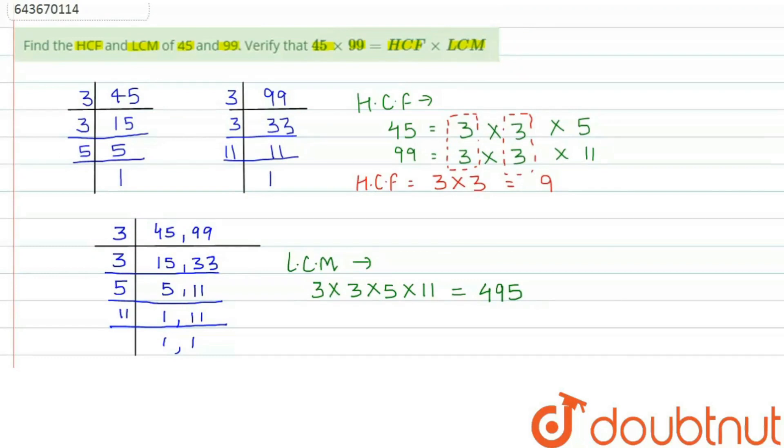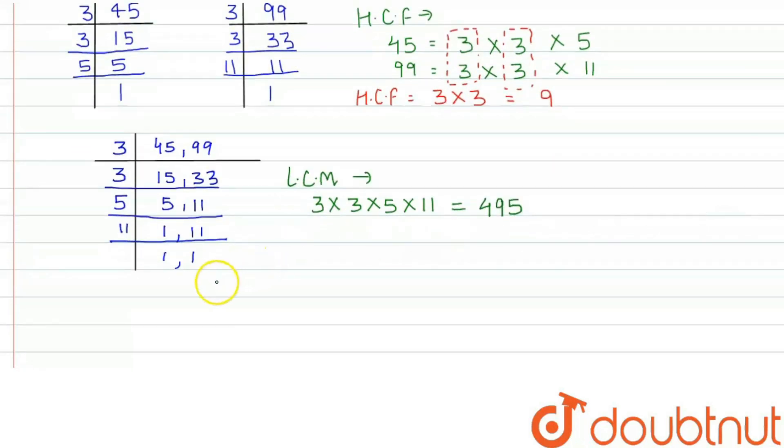Now here we need to verify that 45 into 99 equals HCF into LCM. For the left hand side, we have 45 into 99. 45 times 99 gives 4455.